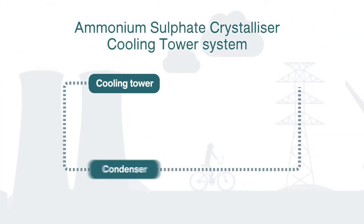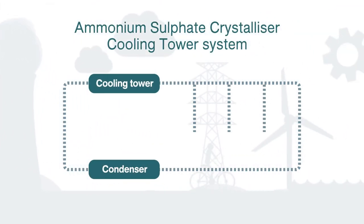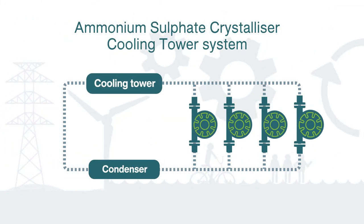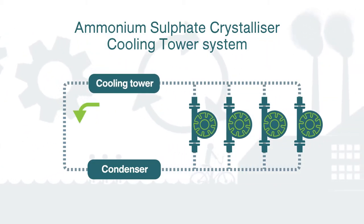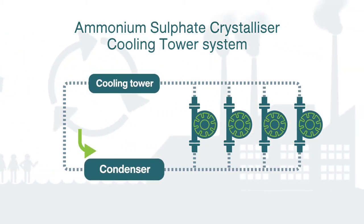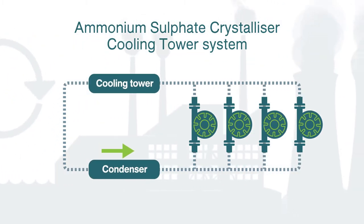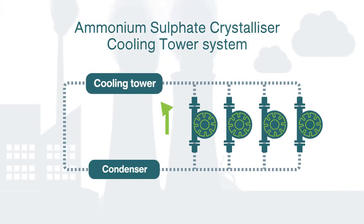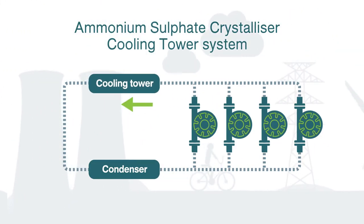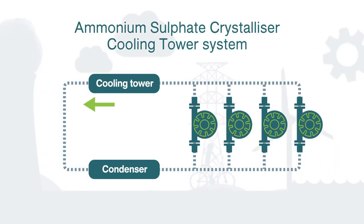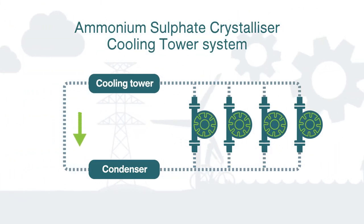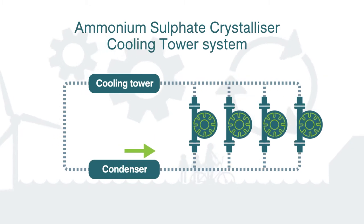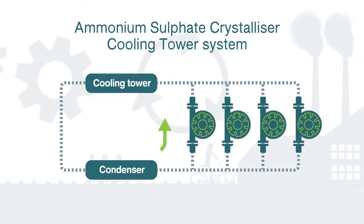The ammonium sulfate crystallizer cooling tower system facility pumps cooling water from the cooling towers to the condenser, returns the water from the condenser back to the cooling tower, and cools it again before recirculating it back to the condenser.